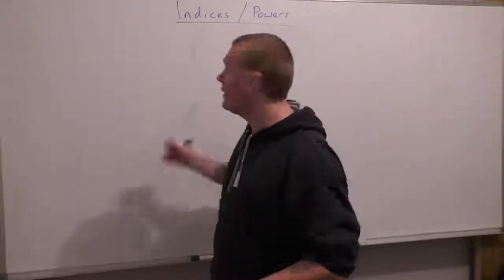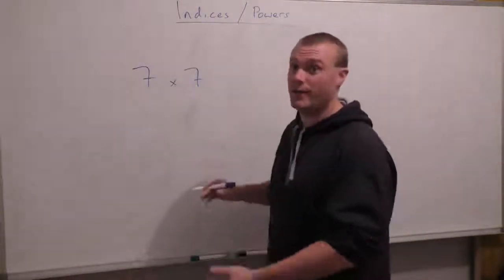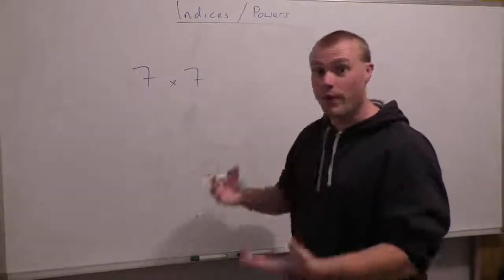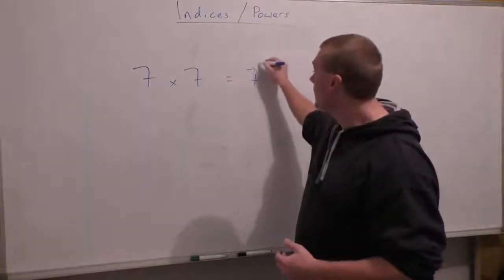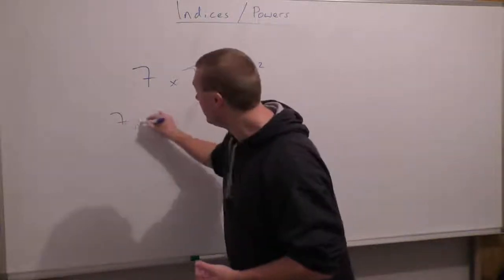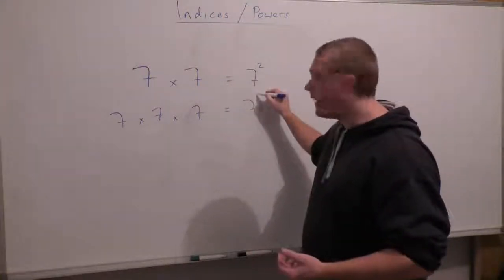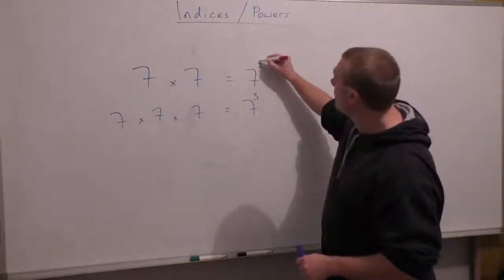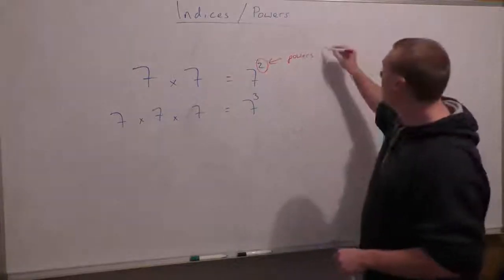Let's begin with something quite easy: 7 times 7. I'm not interested in the fact that 7 times 7 is 49, although it is. What we're going to look at is how else we can write 7 times 7. 7 times 7 can be written as 7 squared, or 7 to the power of 2. If we have 7 times 7 times 7, that could be written as 7 to the power of 3. These little numbers at the top are called powers or indices.